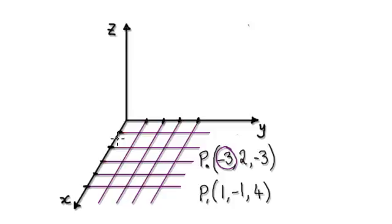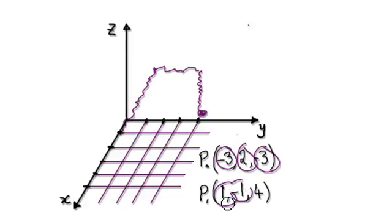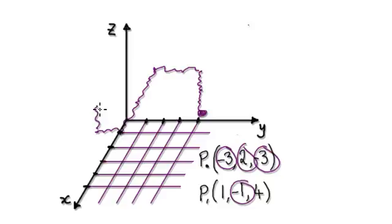So to do this, the first point will be negative 3, 1, 2, 3 — and then 2 across in the y direction, 1, 2 — and then 3 in the negative direction, 1, 2, 3. So somewhere around here. And then this point here will be 1, and then negative 1 in the y direction, and then 4 up: 1, 2, 3, 4 — somewhere around here.